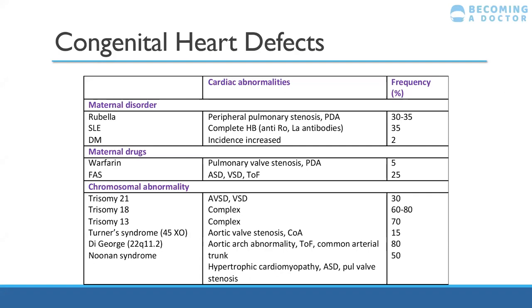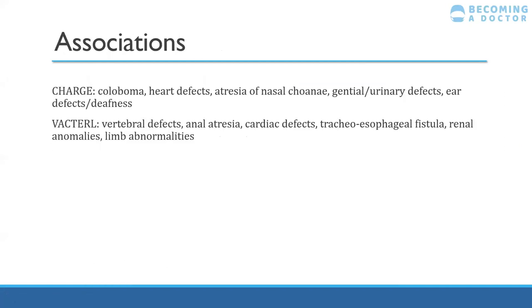There are a couple of associations — known as syndromes — which have heart defects as part of them. You may have heard of CHARGE or VACTERL. VACTERL is usually associated with laryngomalacia or tracheomalacia. To be diagnosed with VACTERL association, you tend to need about three features, of which cardiac defects can be one — usually VSDs, ASDs, or tetralogy of Fallot. Very similar for CHARGE association — most commonly tetralogy of Fallot, followed by VSD, then AVSD, and aortic arch abnormalities as in DiGeorge syndrome.